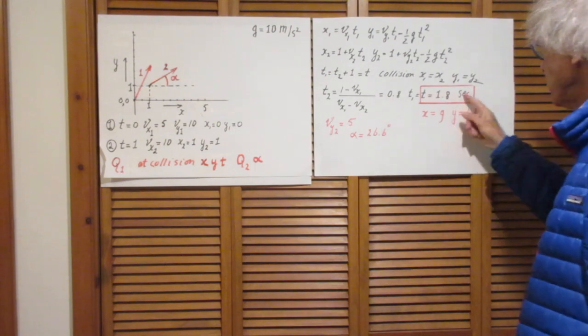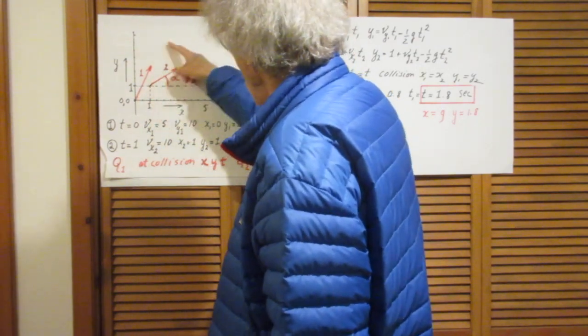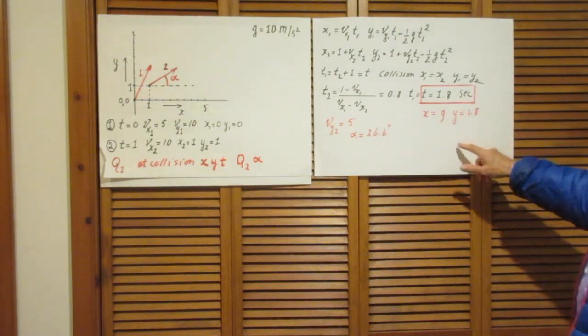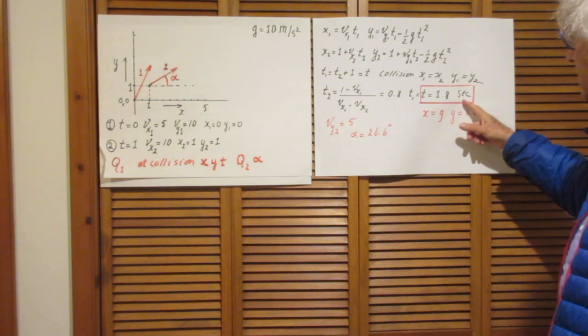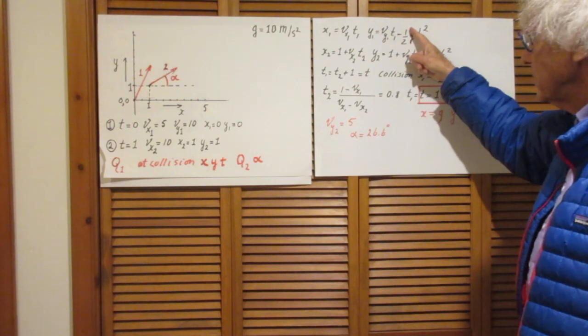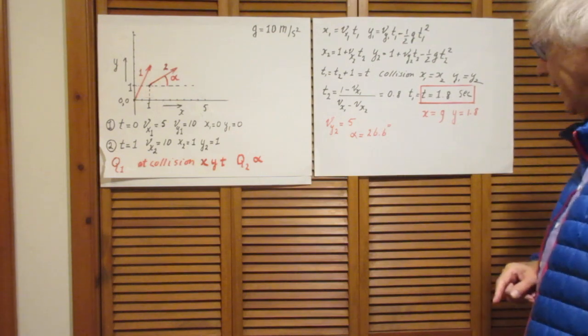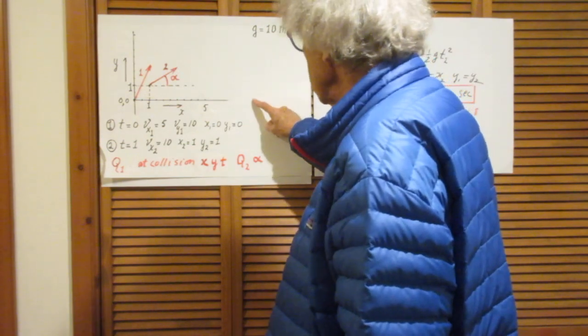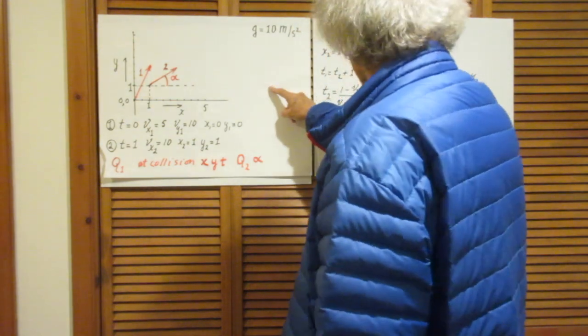So now that you know where this object is, this object number 1, where that object is after 1.8 seconds, you immediately find that after 1.8 seconds, which you substitute now in this equation, and in this equation you find then that x is 9 and y is 1.8. So x is 9, which is somewhere here, and y is 1.8, which is somewhere here.